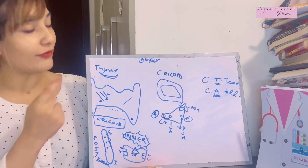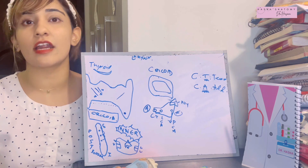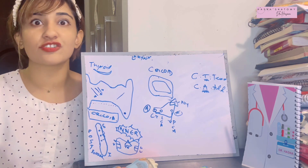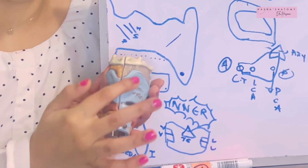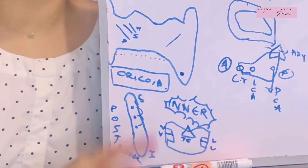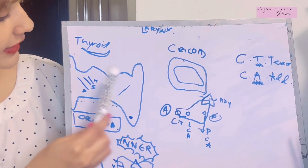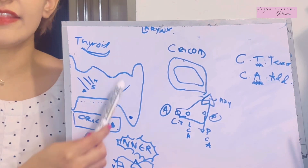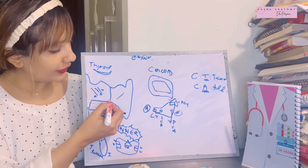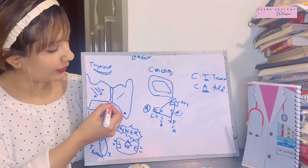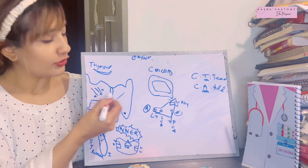Let's talk about the first cartilage: the thyroid cartilage. It is the main cartilage of the larynx — the largest of all. It is formed by two laminas: the right lamina and the left lamina. These two laminas meet in the midline; their anterior borders are bound to each other, forming the laryngeal prominence known as the Adam's apple.